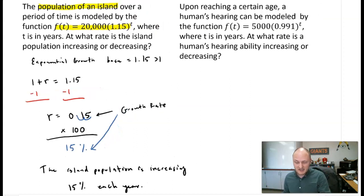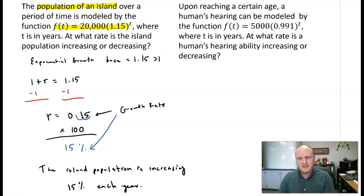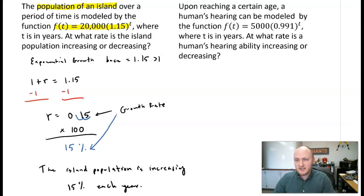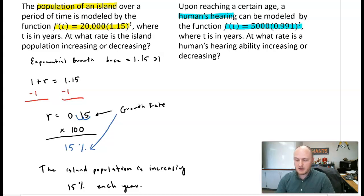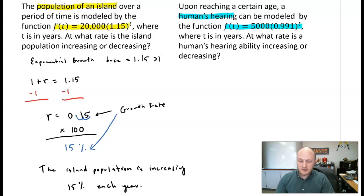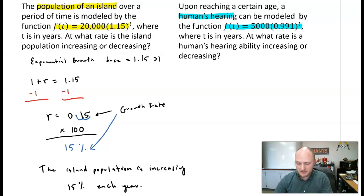Let's look at a second example. Upon reaching a certain age, a human's hearing can be modeled by the function f of t equals 5,000 times 0.991 to the power of t, where t is in years. At what rate is the human's hearing ability increasing or decreasing? It's no surprise that this is exponential decay — as people get older, they lose their hearing.